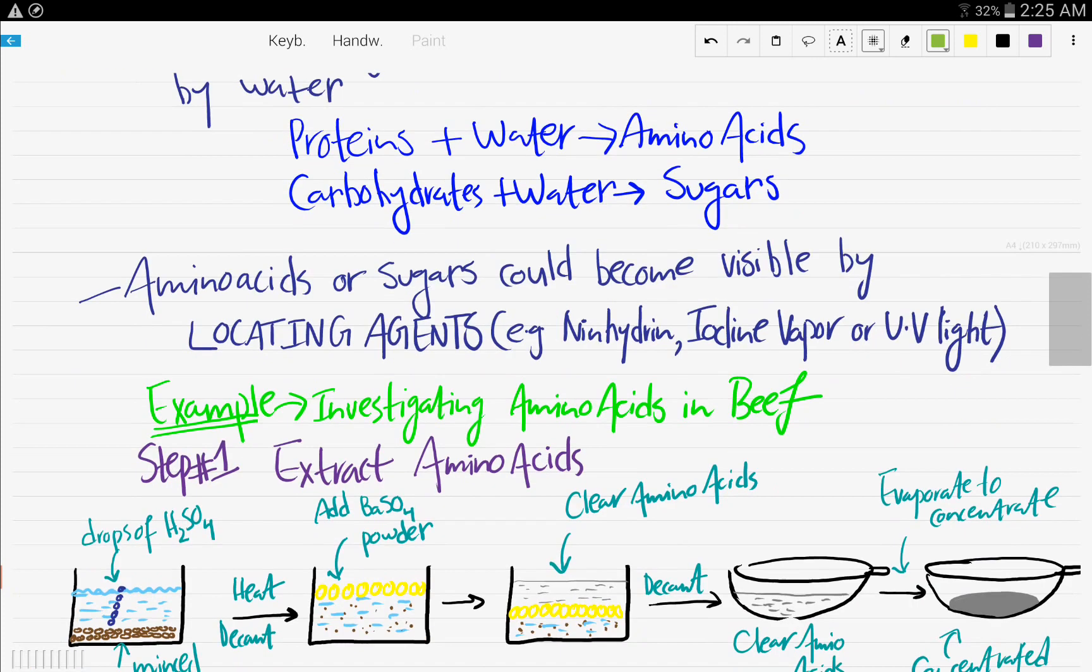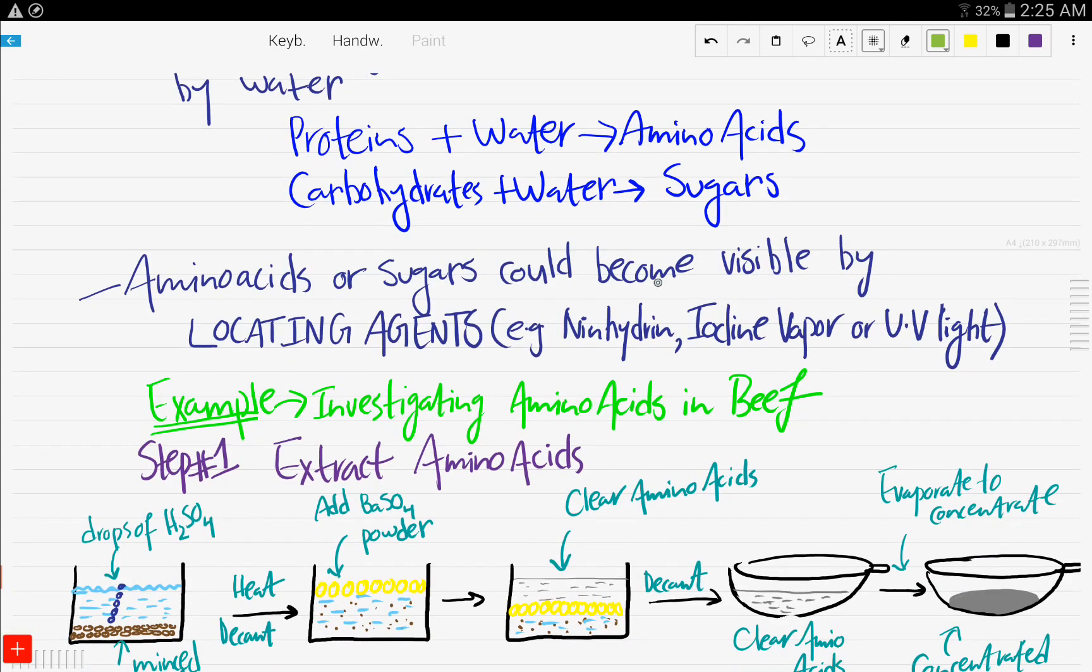So amino acids or sugars are colorless. So they could become visible by something known as the locating agent. And there are many locating agents out there, but the most common ones that you're going to come across in the exam is ninhydrin, iodine vapor and UV light.